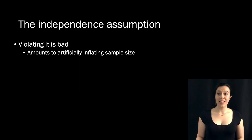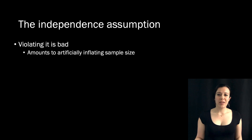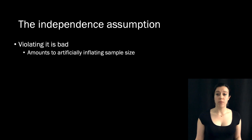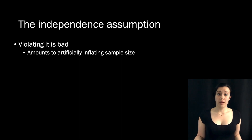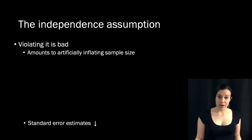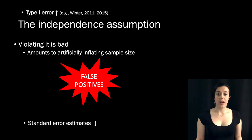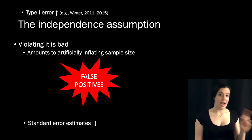For example, if you had a hundred observations that are all independent, they're giving you a hundred pieces of information about the relationship between x and y. But if they're correlated, then you're not really getting all new information from each of those points — some of that information is redundant with information provided by other points. So what happens to your inferences? Your standard error estimates go down and your type 1 error rates go up. That means you're more likely to get a false positive, and that is not what we want.